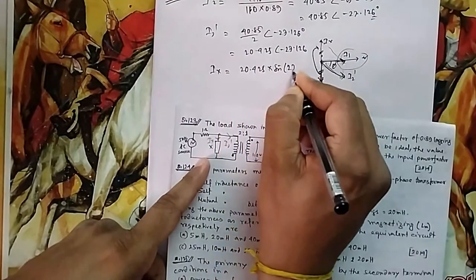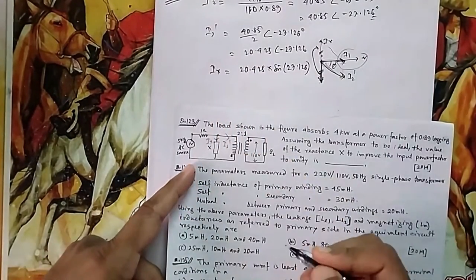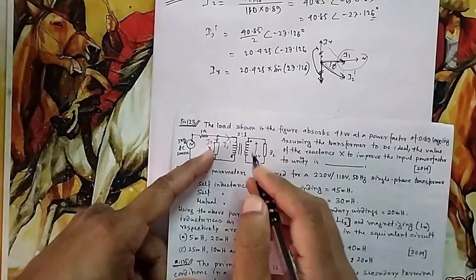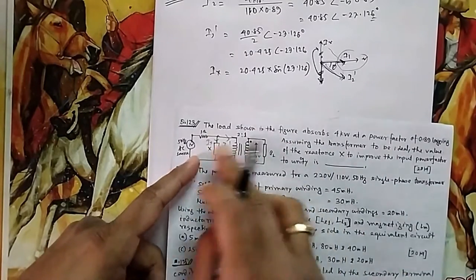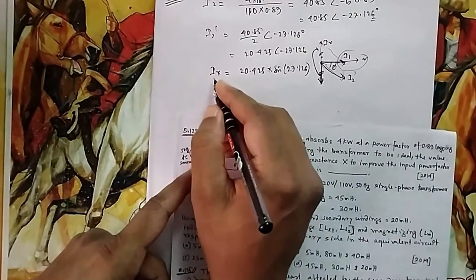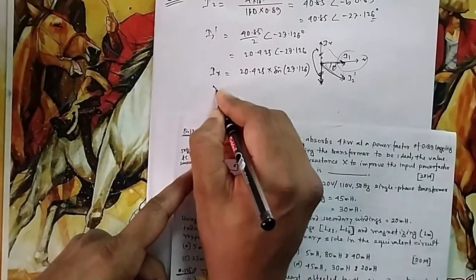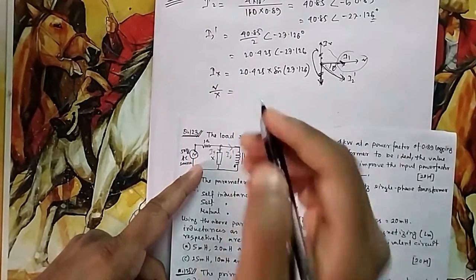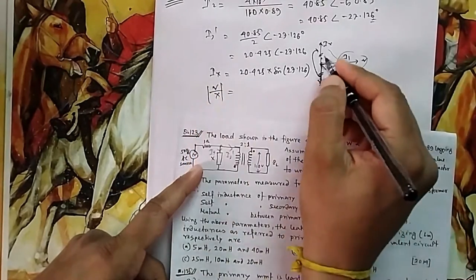So your Ix, whatever your Ix, that should be equal to 20.425 times sin of 27.126. Now what is this voltage? This voltage - because it is 110, it should be 220 this side voltage.